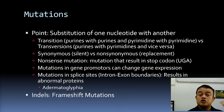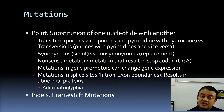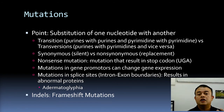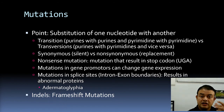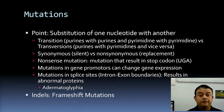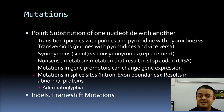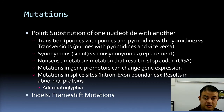Nonsense mutations result in a stop codon — for example, UGA — which stops transcription. Mutations in gene promoters can change gene expression. Mutations in splice sites at intron-exon boundaries can result in abnormal proteins where introns are also transcribed, and this is the reason for many diseases — for example, adermatoglyphia, where individuals have no fingerprint, so fingerprint and biometric sensors don't work.